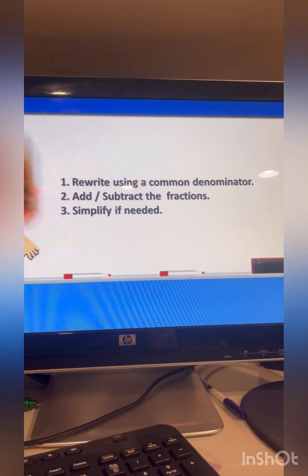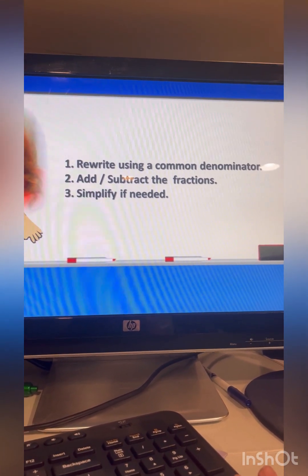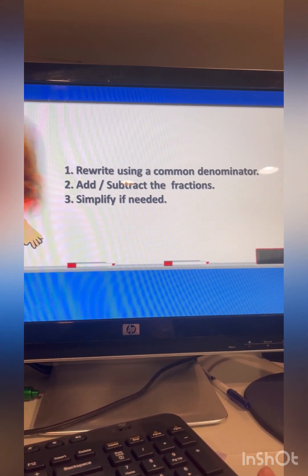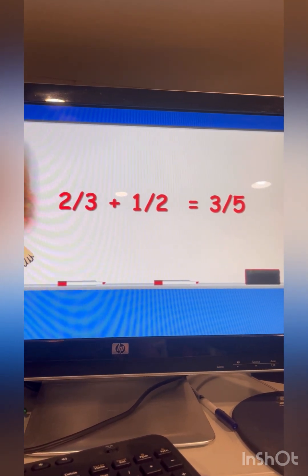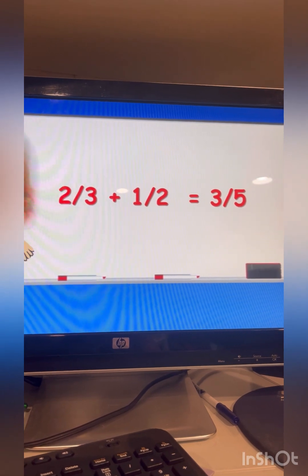But we're going to add once we have a common denominator and we rewrite that problem. We are going to add and subtract, and then if we need to, we will simplify it. But we do know that two-thirds plus one-half does not equal three-fifths.